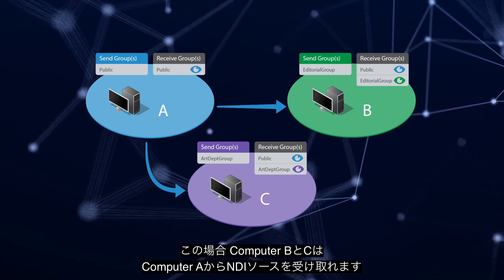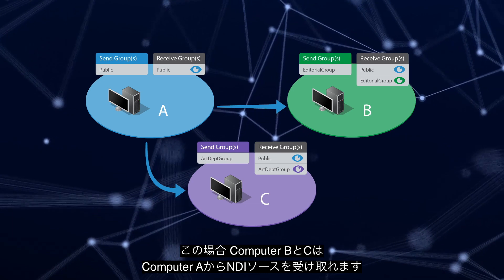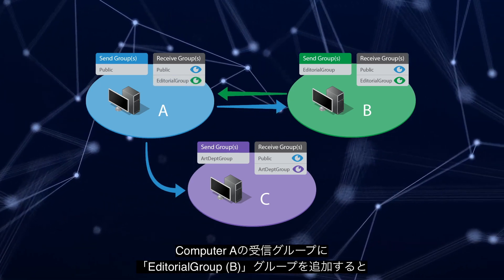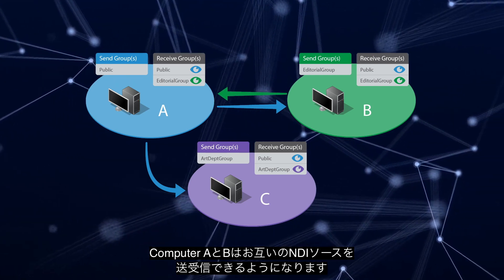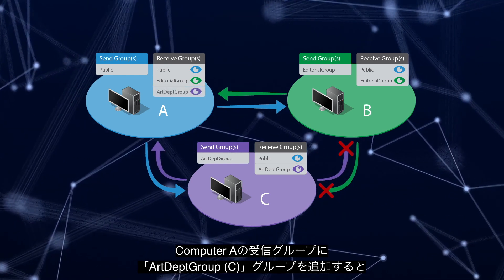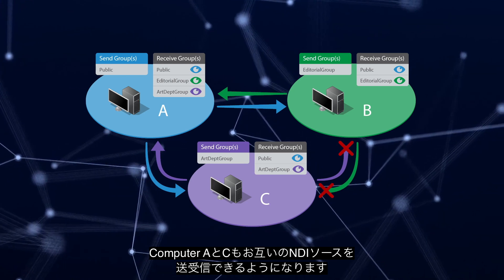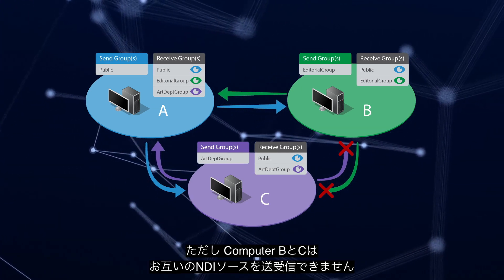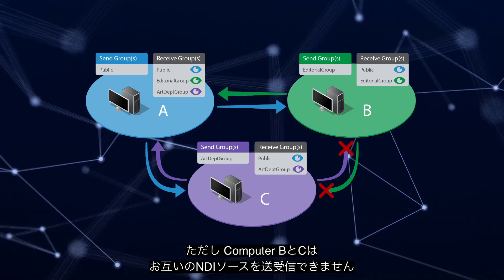This shows that Computers B and C can only receive NDI sources from Computer A. If we add the Editorial Group to Computer A's receive group, then Computers A and B can both send and receive each other's NDI sources. Similarly, if we add the Art Department Group to Computer A's receive group, Computers A and C can send and receive each other's NDI sources. However, Computers B and C cannot see each other's NDI sources.